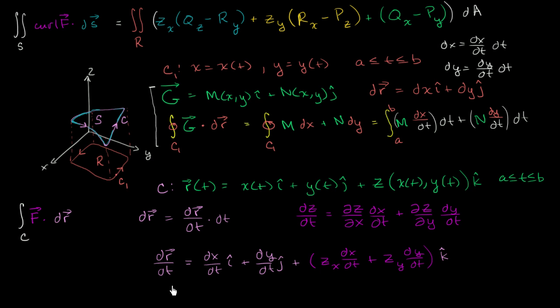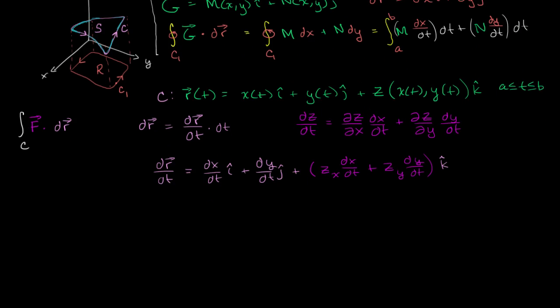With this out of the way, if we wanted what dr is, dr is just going to be this whole thing times dt. So now we can rewrite our line integral. We're going to go into the t domain, and t is going to go between a and b.